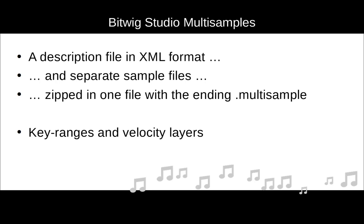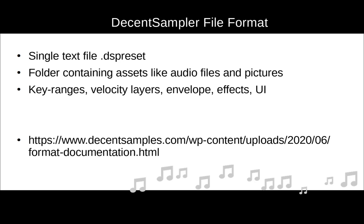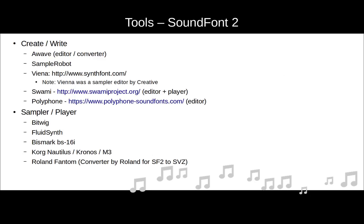Bitwig also has another format for sampler presets, but that's a binary format with no available documentation. The new format on the block is the Decent Sampler plugin, whose developer also made the format public — it's well documented at their website. It's also XML-based, called a .dspreset file. In contrast to Bitwig, it can also include UI elements like faders or knobs and pictures, stored in subfolders alongside your samples. Features are similar to Bitwig: key ranges, velocity layers, one envelope, and some effect descriptions.